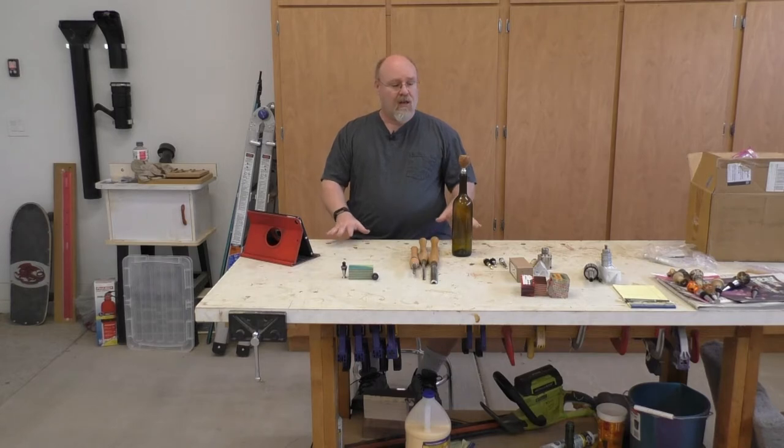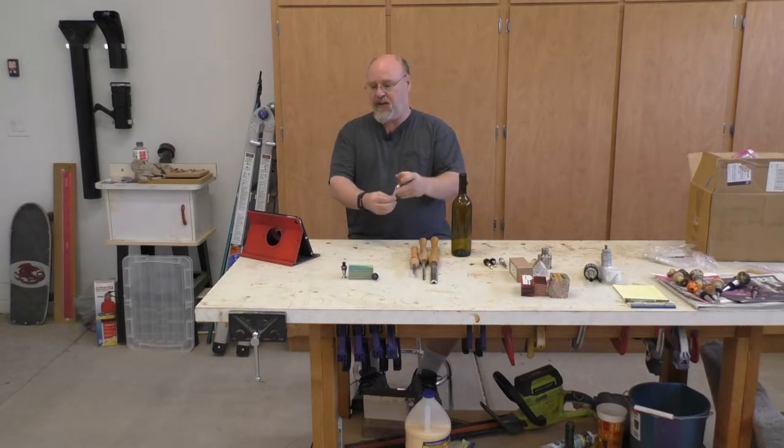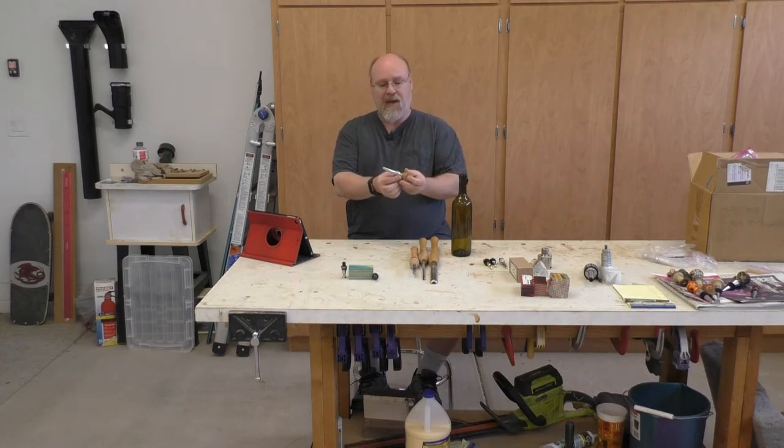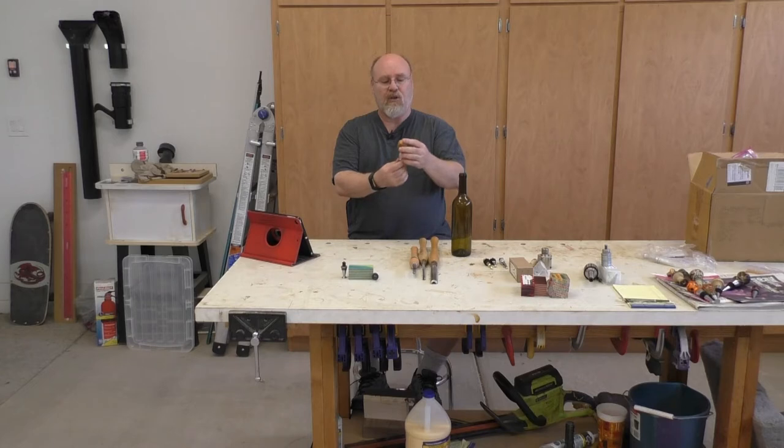So let's get started. Bottle stoppers are exactly like that. They're basically a piece of metal with some sort of rubber gasket and then a piece that you turn that screws onto it that then just sits inside the bottle.